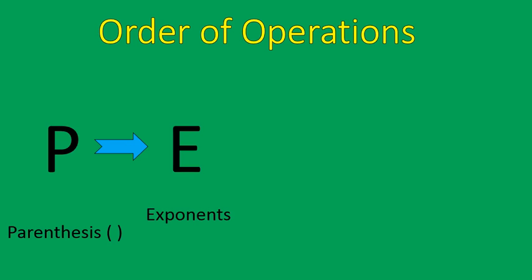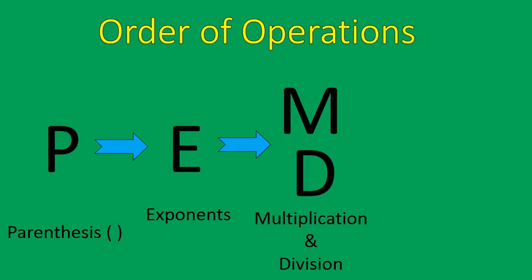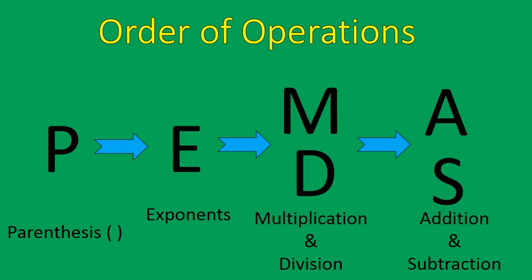Then we move along to our exponents. Then we would move along to our multiplication and division. I put these on top of each other because they get done in order in one step from left to right as they appear. I'll show you that in a couple examples today. Same thing with addition and subtraction. They get done in the order they appear from left to right. So this is the basic order of operations.